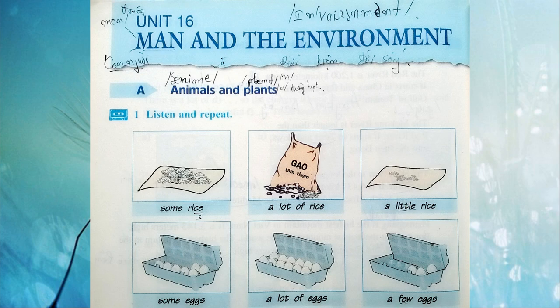Unit sixteen: Man and the Environment. Section A: Animals and Plants. Activity one: Listen and repeat.